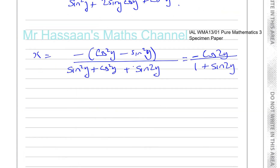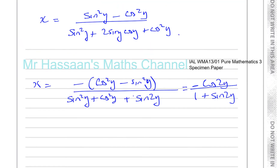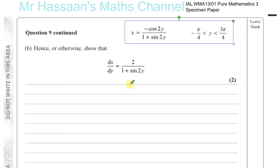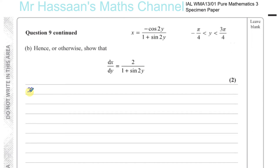Now part B. It says hence or otherwise show that dx/dy equals 2 over 1 plus sine 2y. So we've got to differentiate x with respect to y. We've got to differentiate this expression with respect to y. Here we have a quotient of two different functions, so we're going to use the quotient rule.